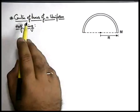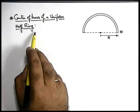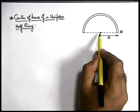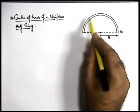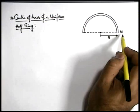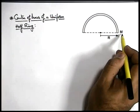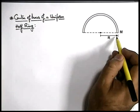Here we'll find out the center of mass of a uniform half ring. In this picture we can see that there is a half ring which is having a uniformly distributed mass m, and it is of radius r.